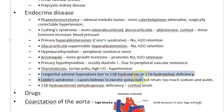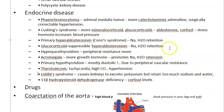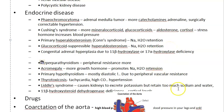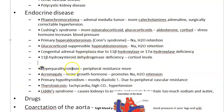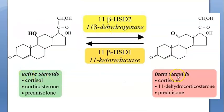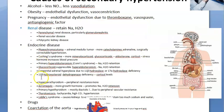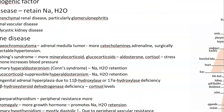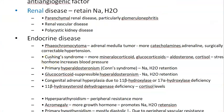Congenital adrenal hyperplasia is also adrenal gland related. Similarly, 11-beta hydroxysteroid dehydrogenase deficiency: this dehydrogenase normally converts active steroids into inert steroids. If there is a deficiency, active steroids accumulate, leading to sodium and water retention. Cortisol and stress hormones increase blood pressure through this mechanism.